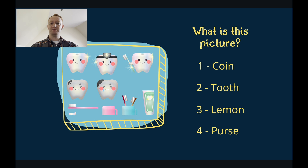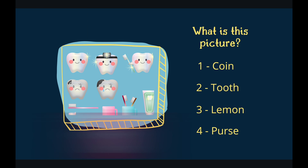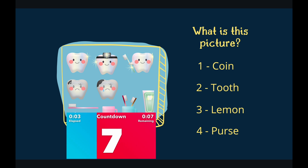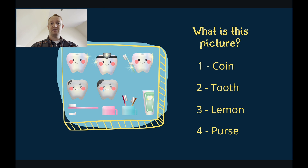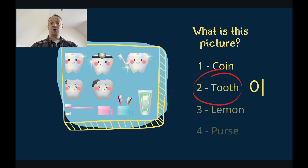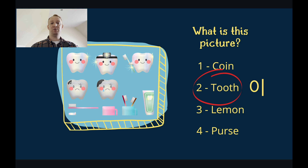What is this a picture of? Is it coins? Is it a tooth or teeth? Is it lemons? Or is it a purse? You have 10 seconds. The answer is tooth — these are teeth. The plural of tooth is teeth: tooth is one, more than one is teeth. There are three healthy teeth and two unhealthy teeth. We have to brush our teeth after eating.